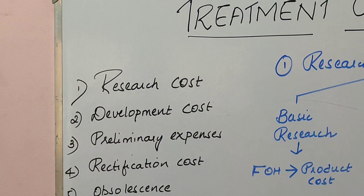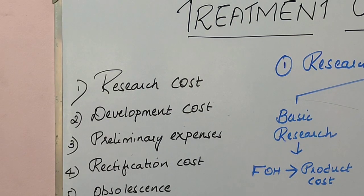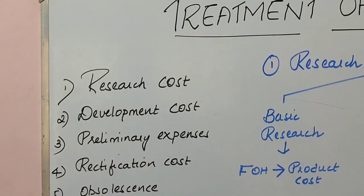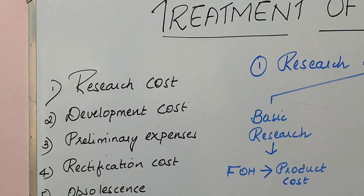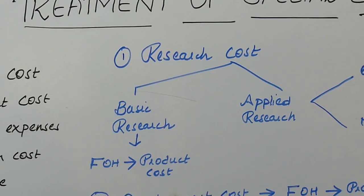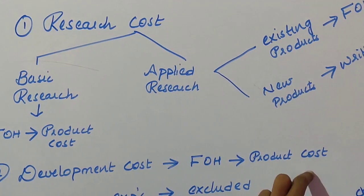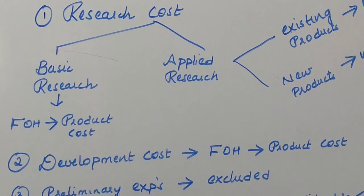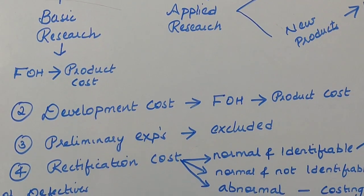Development cost is the cost of developing your research findings and research knowledge. When research findings and knowledge are developed into a plan, process, equipment, or design, that cost is termed development cost. In cost accounting, development cost is treated as factory overhead or manufacturing overhead and is attached to the product cost.